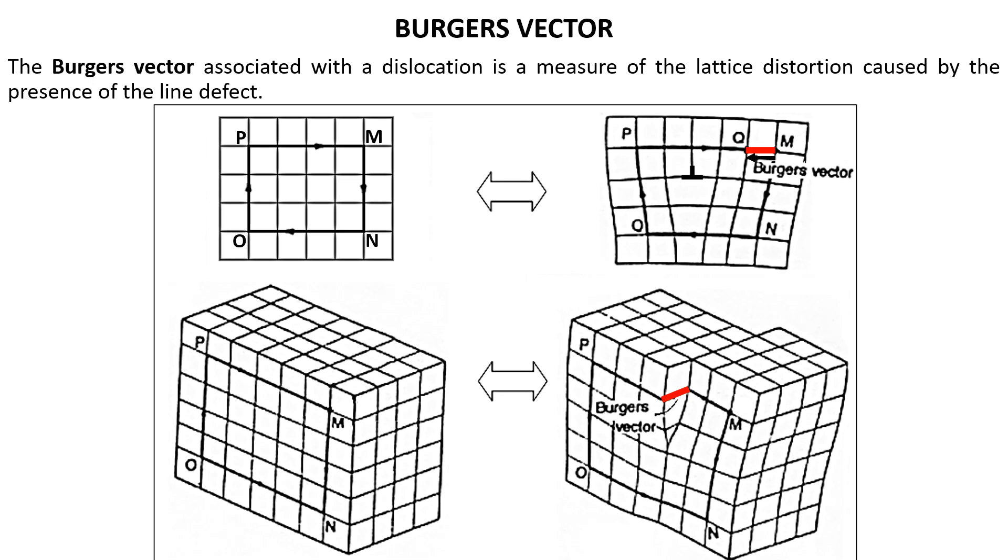Burgers circuit traces a path through the perfect lattice returning to its original starting point, and this lattice is regular and undisturbed.